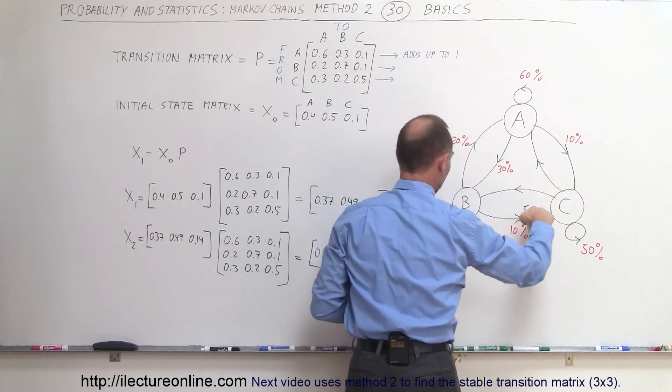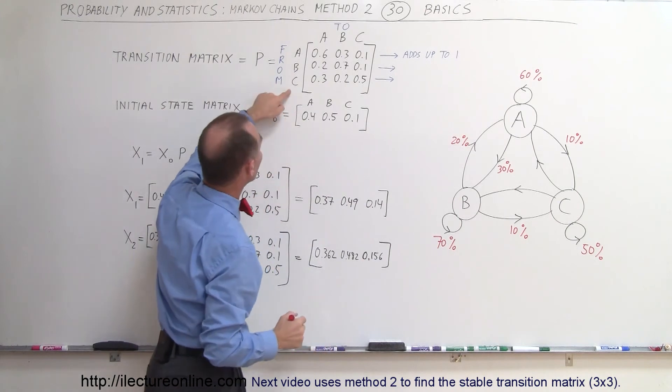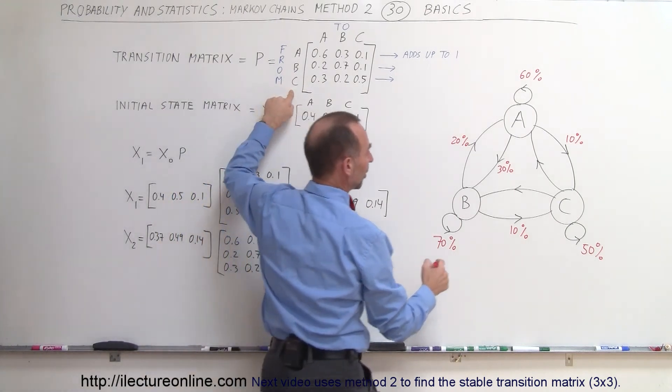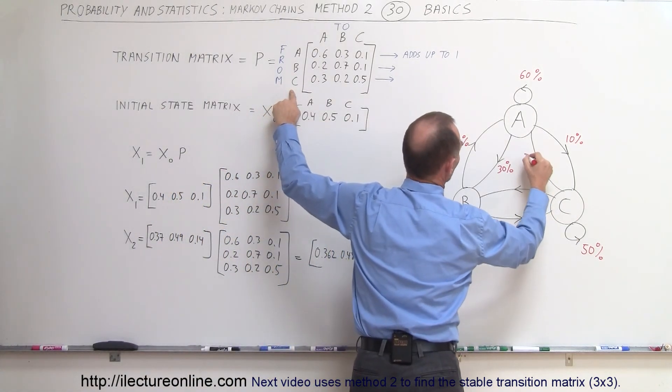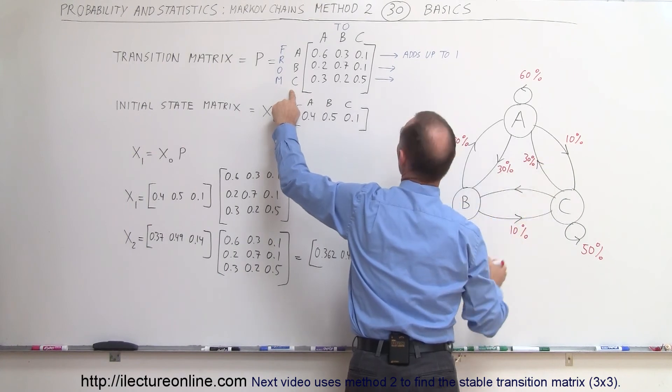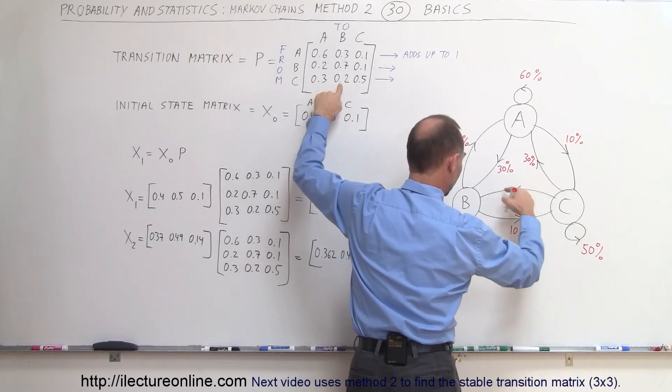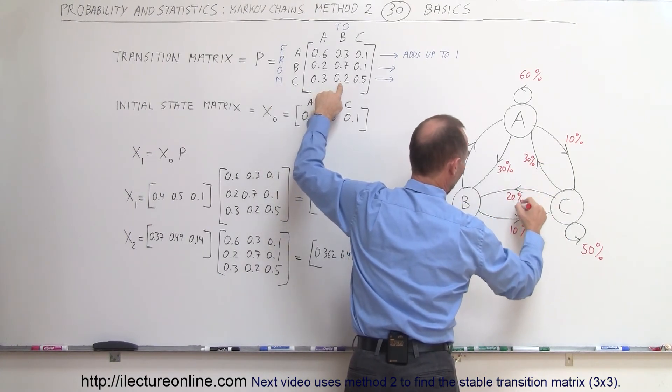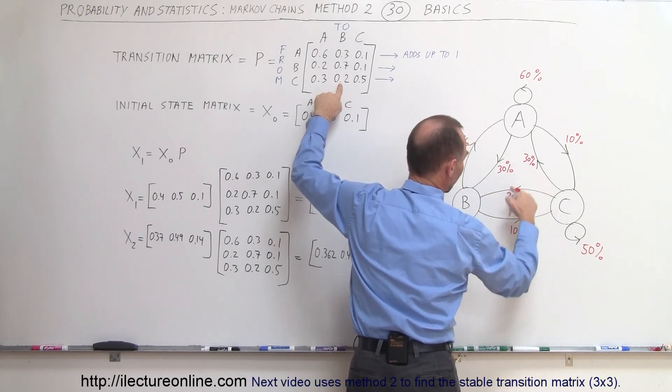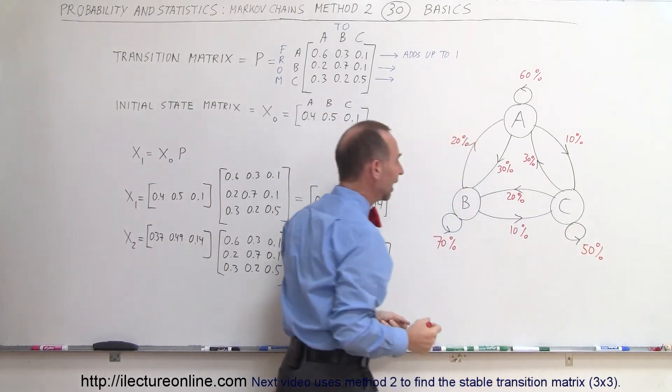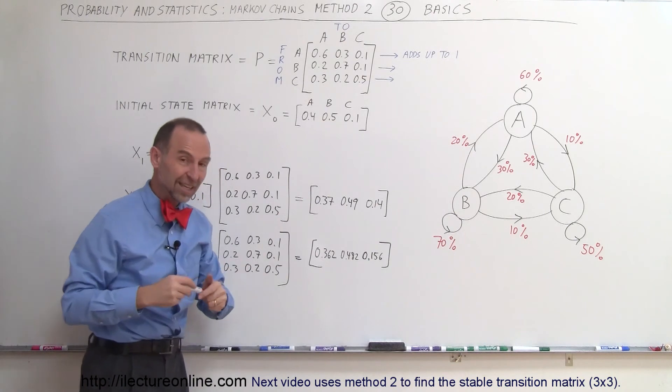And again those better add up to 100 percent than they do. Now from C to A is 30 percent so from C to A this is 30 percent. From C to B is 20 percent and staying with C is 50 percent so this plus this plus this 100 percent and that is correct as well.